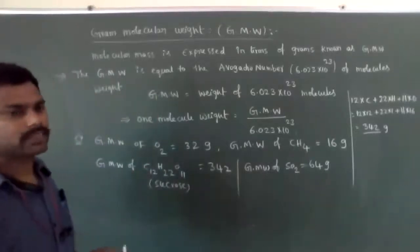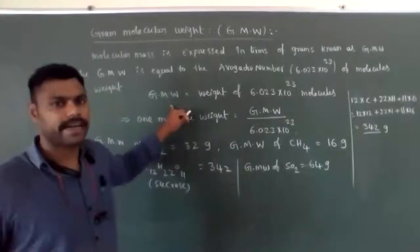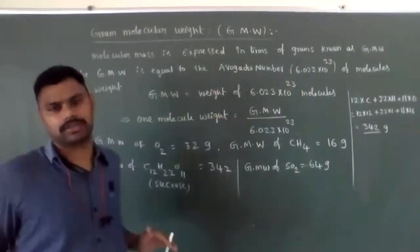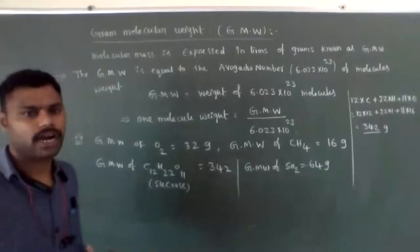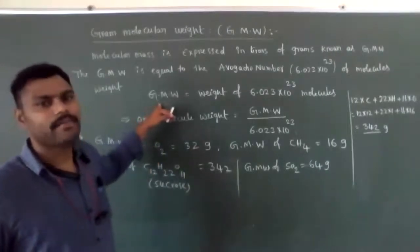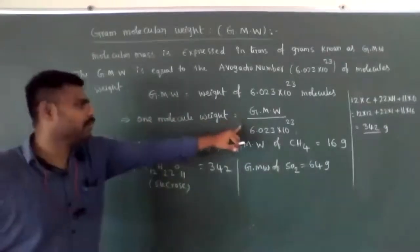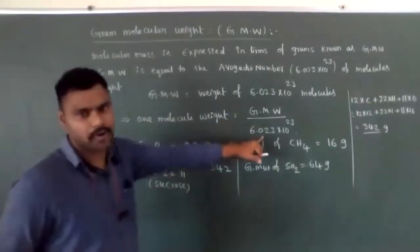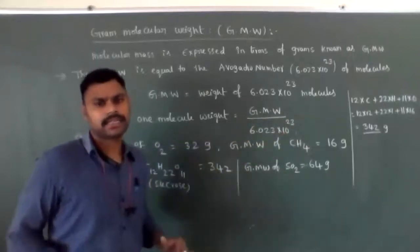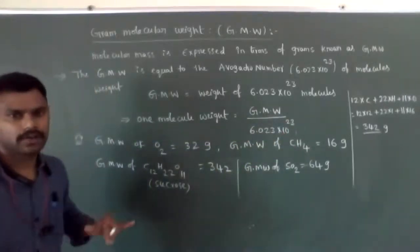Like that, gram-molecular weight is calculated. Generally, gram-molecular weight is nothing but the weight of the Avogadro number of molecules. The weight of the Avogadro number of molecules is known as gram-molecular weight. According to that, one molecule's weight equals gram-molecular weight divided by 6.023 × 10²³.